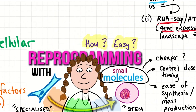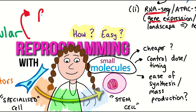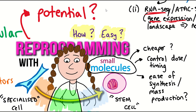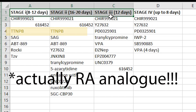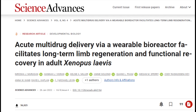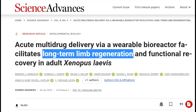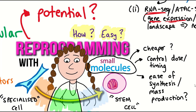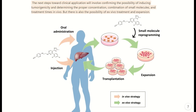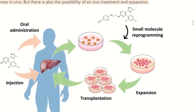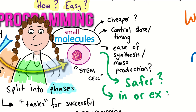How would this information be applied? It could be developed as small molecule oral drugs, injected intravenously, or applied topically. One of the components is retinoic acid, which was used in work from Michael Levin's lab that promoted limb regeneration in frogs. The next step towards clinical application would involve confirming whether these drugs could induce tumorigenesis, and determining the proper concentration, combination, and treatment times in vivo. There is also the possibility of ex vivo treatment and expansion.